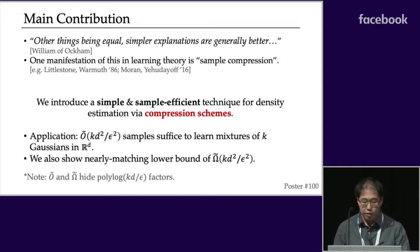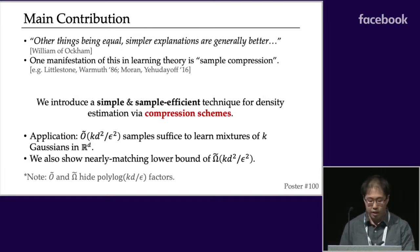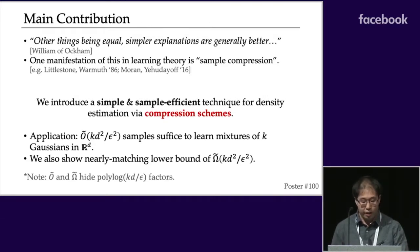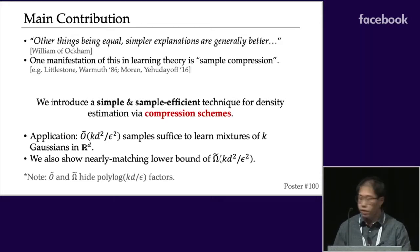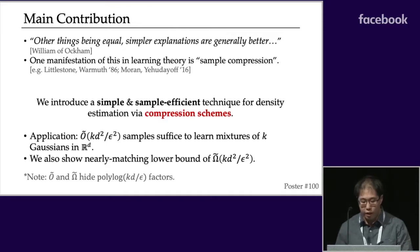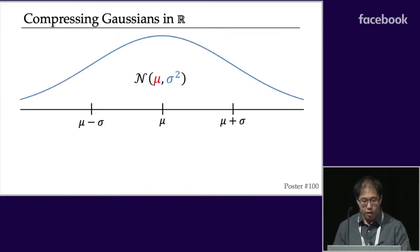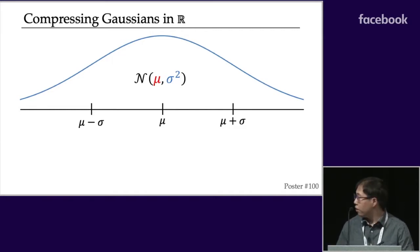The main application of this new technique is an improved upper bound for the sample complexity of mixtures of Gaussians. We show that KD² / ε² samples suffice — matching what we'd naively guess — and we also show a nearly matching lower bound. The tildes on top of the O's and Omegas are hiding polylog factors.